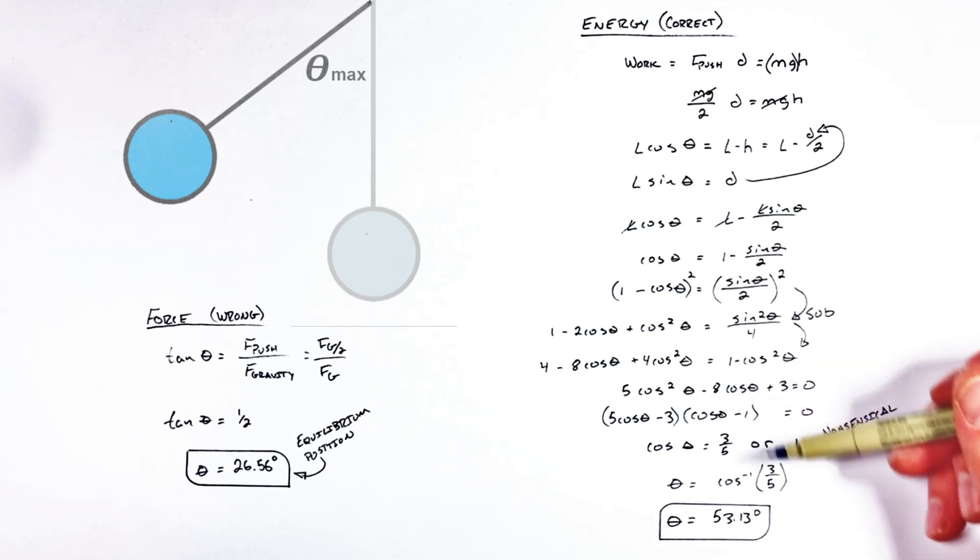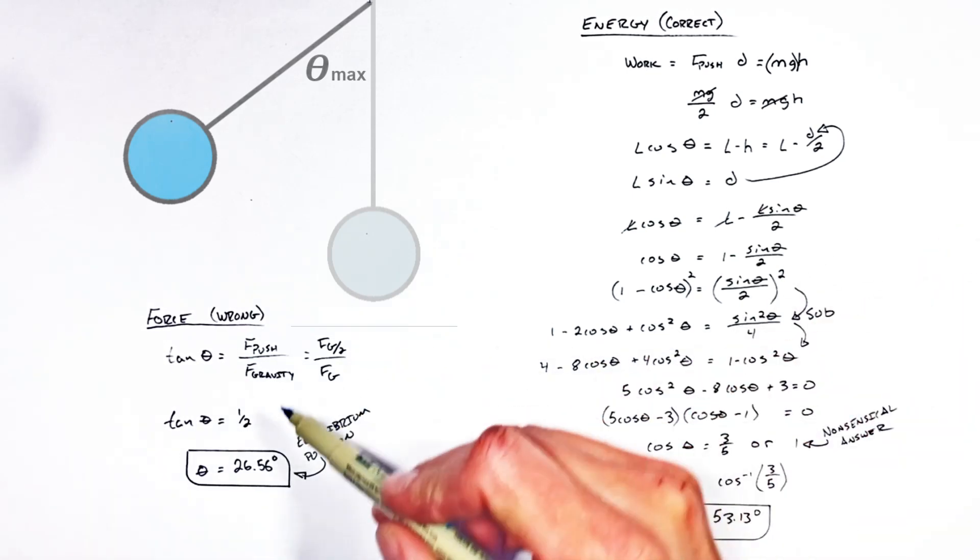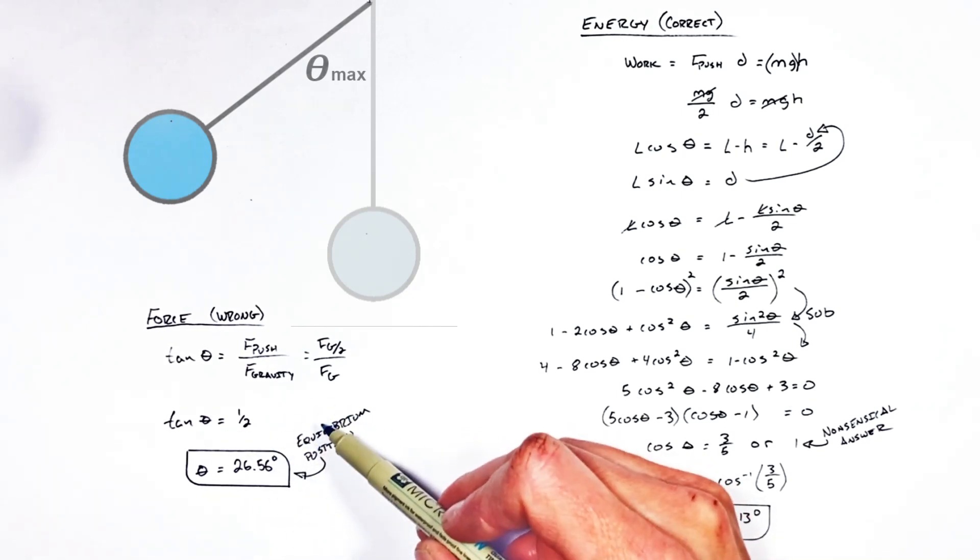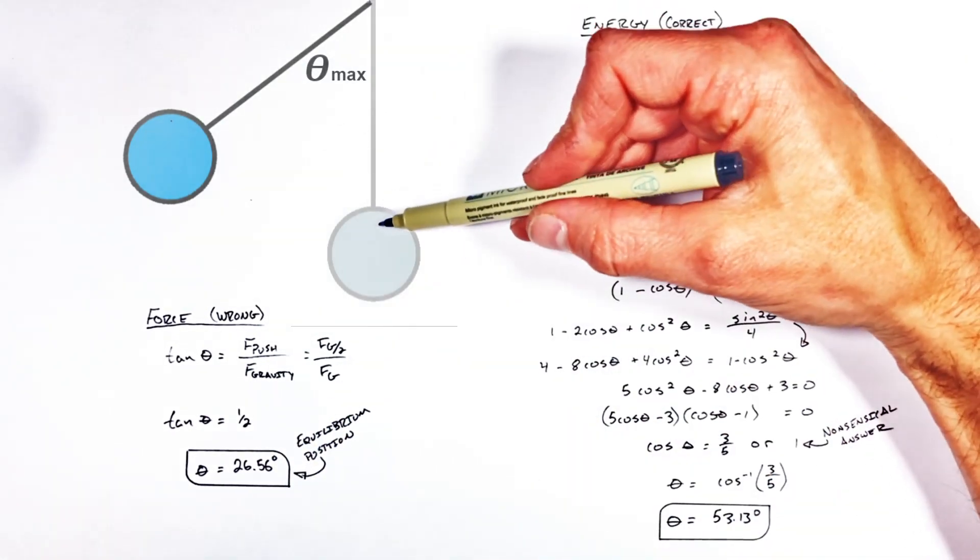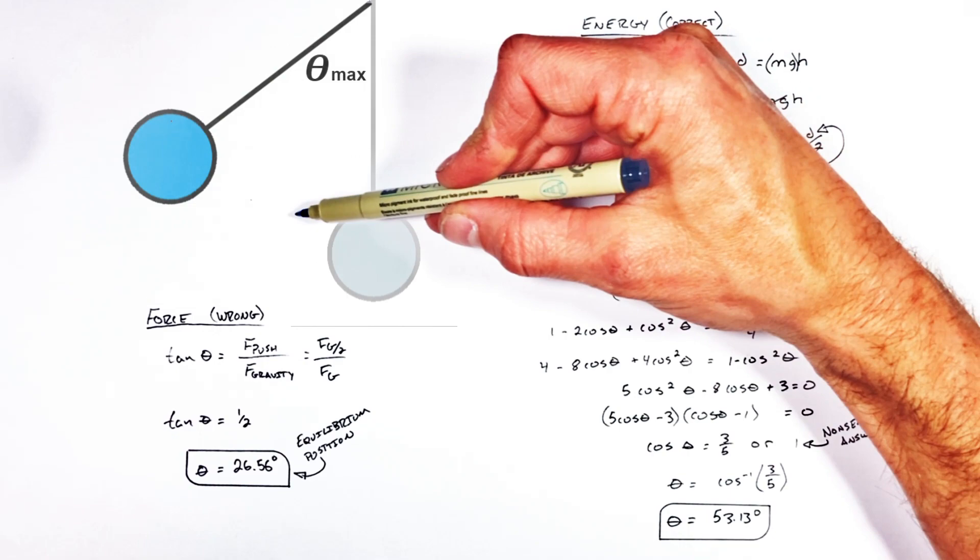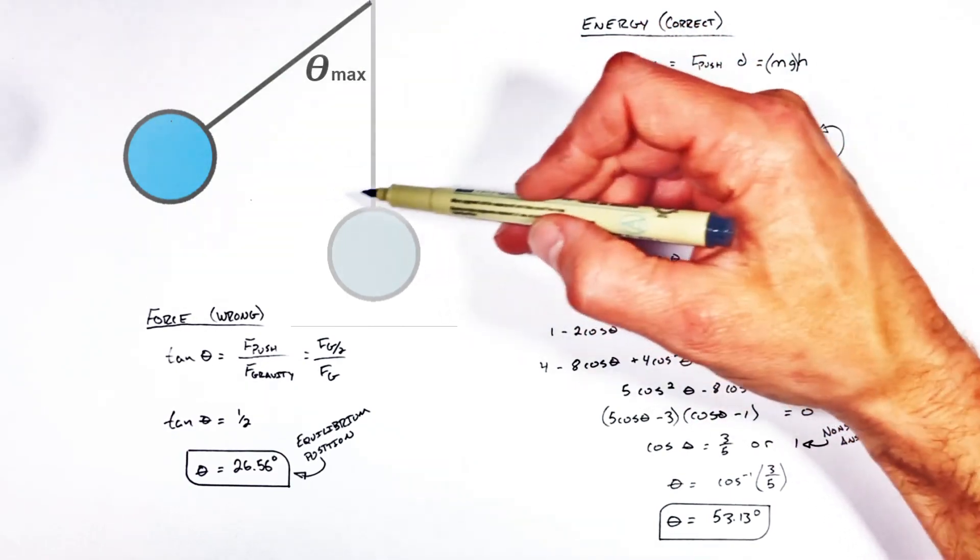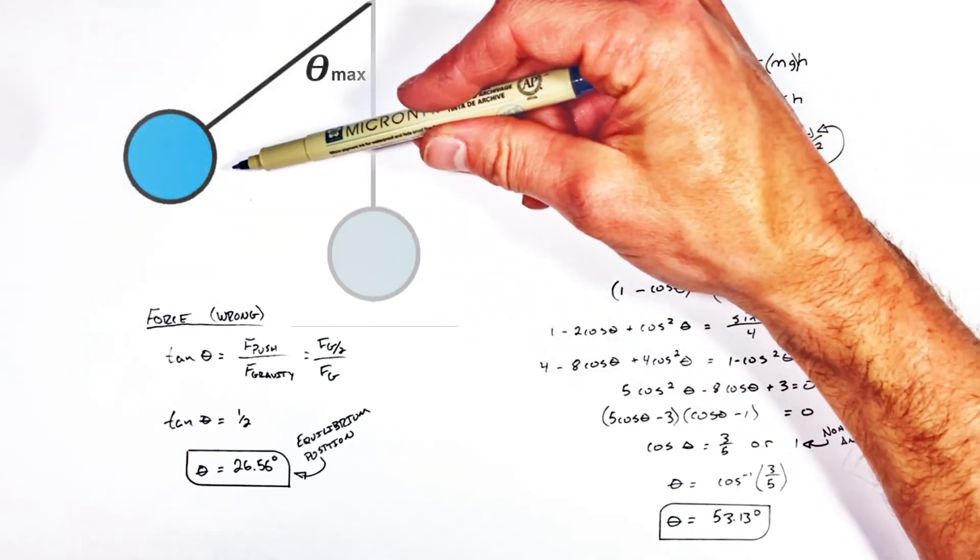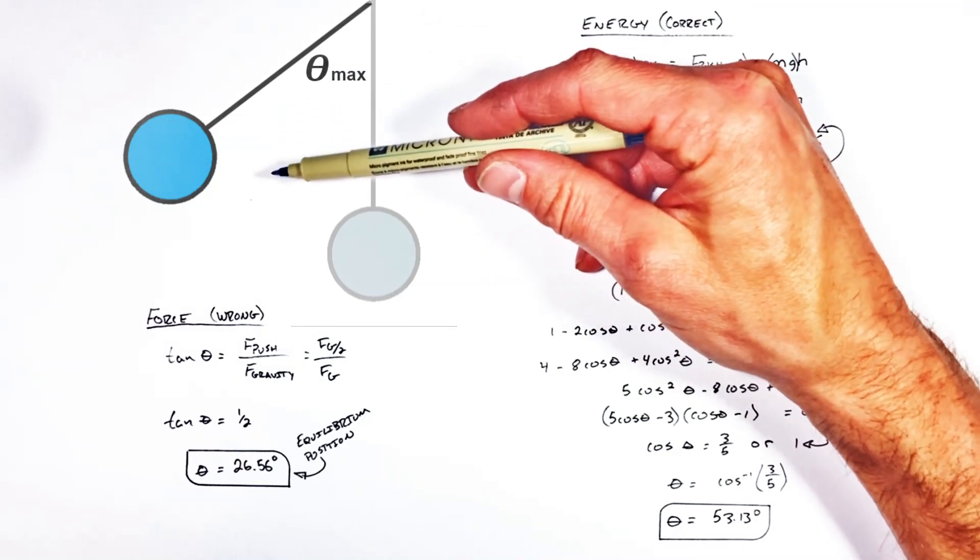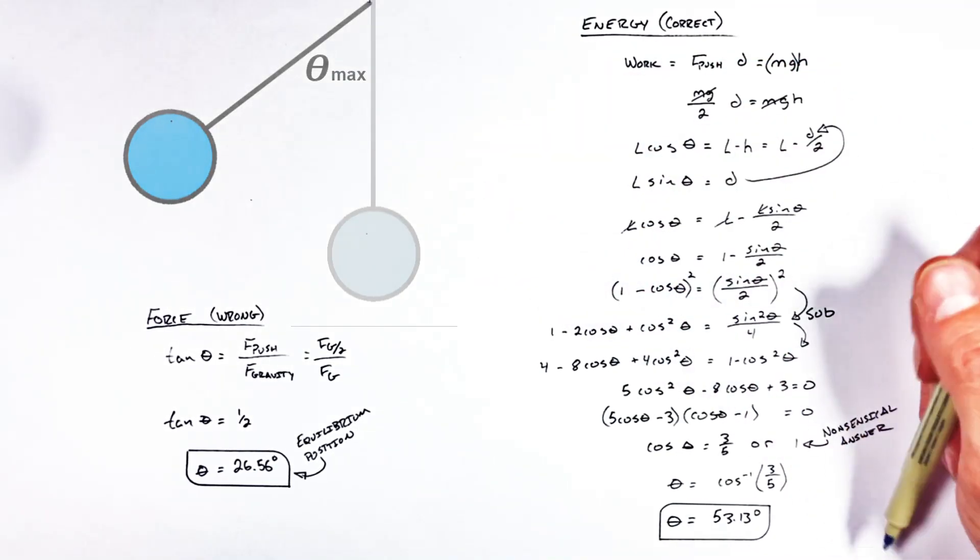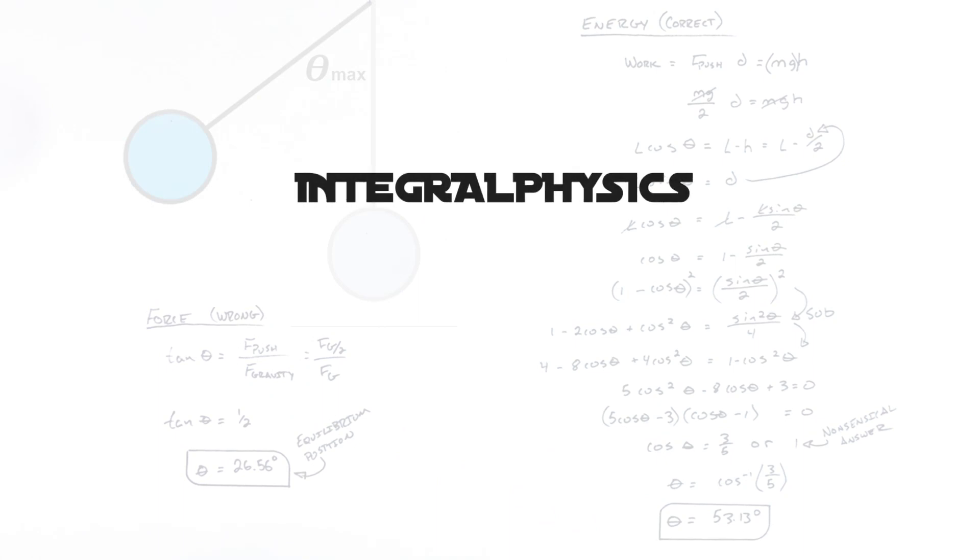Now it needs to be pointed out, it's not a coincidence that this maximum angular position is twice as large as our equilibrium position. Remember, that pendulum was speeding up for 26 and a half degrees as we pushed it horizontally. It's going to continue moving upward and thus slowing down as it moves farther to the left here. So I hope you found this useful. And on that note, that's all for now.